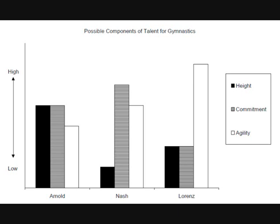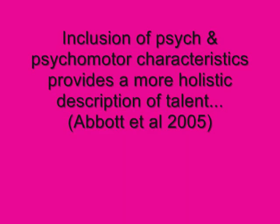Which gymnast would you select as most talented? In gymnastics it is generally considered a disadvantage to be tall, as shorter people have a low centre of gravity and can generate angular momentum quickly. As you may expect, the majority of the class chose Nash because he was the shortest and did comparatively well on two other important factors: commitment and agility. Inclusion of psychological and psychomotor characteristics provides a more holistic description of talent, but still does not provide an understanding of the interaction of these factors over time.